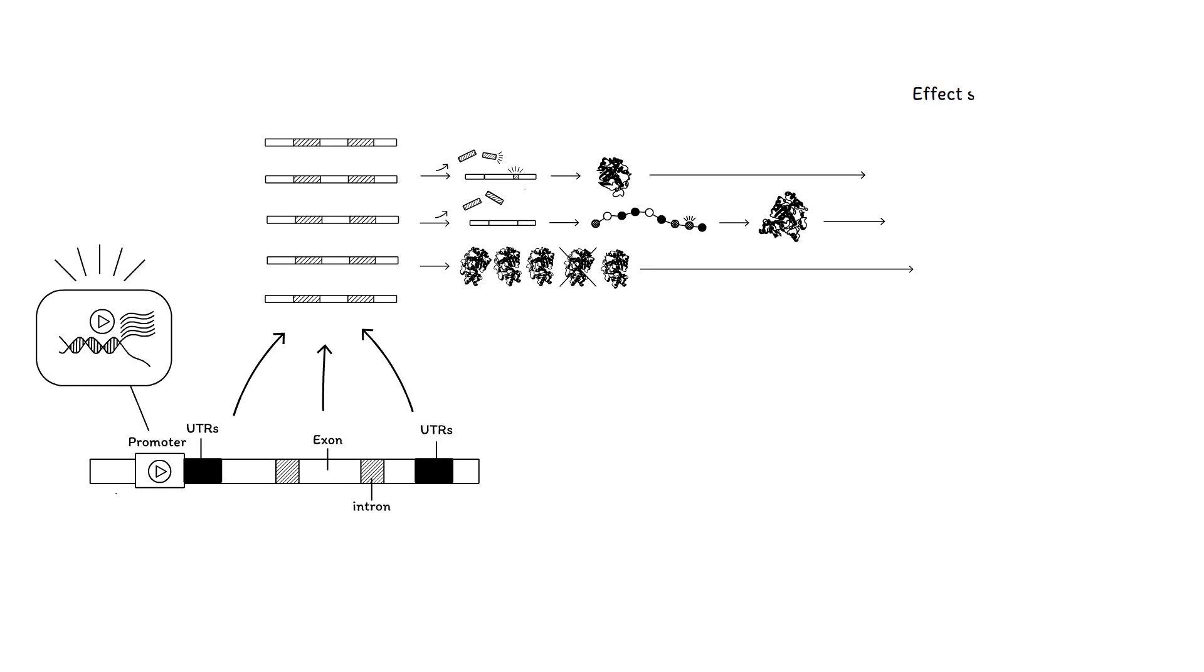The effect size that a variant has on the function of a gene thus varies and can be seen as a continuum, where one genetic variant has a bigger biological consequence than another. For example, a variant that results in a completely unusable protein has a larger biological effect than a variant that only slightly reduces gene expression.